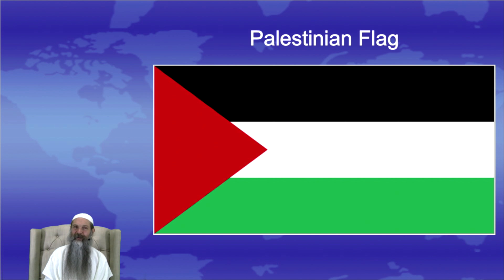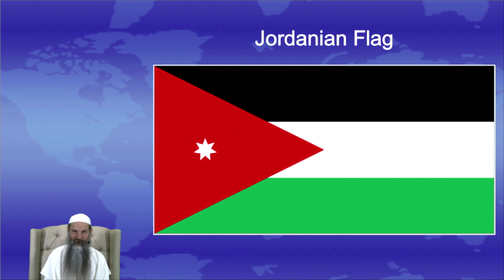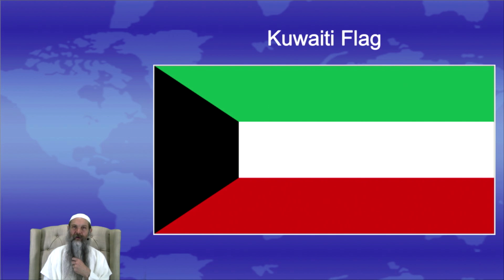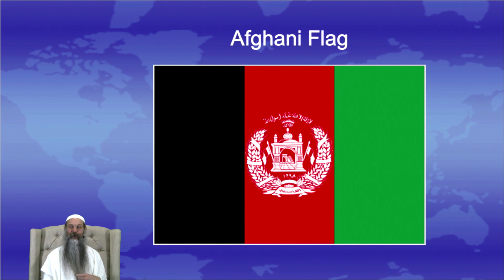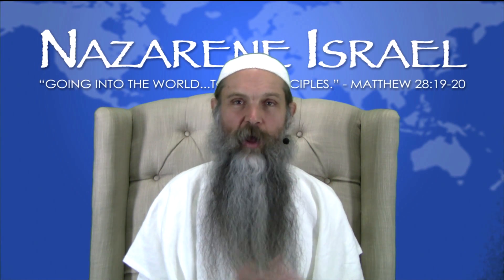For example, the Palestinian flag has the colors white, red, black, and green — the colors of the four horses. The Jordanian flag also has white, red, black, and green. The Kuwaiti flag: white, red, black, and green. The Syrian flag: white, red, black, and green. The Afghani flag: white, red, black, and green. Green is the primary of all these colors.